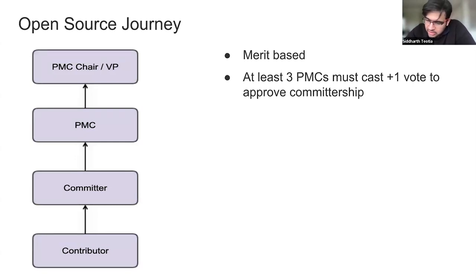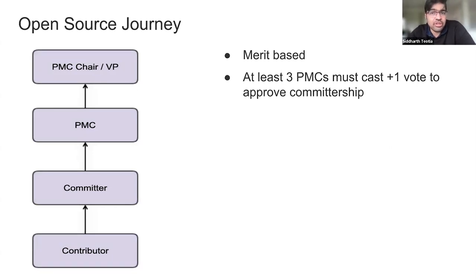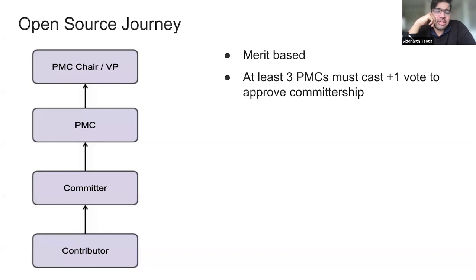The highlight of this is that this is merit-based. Your contributions will be evaluated by the PMC body — their impact, complexity, scope, and things like that — to assess what value you've added to the project. That's how you'll become a committer, and then similarly evaluation continues toward PMC. The general process in Apache is that whenever a vote happens to make a contributor a committer, or a committer a PMC, at least three PMCs must cast their vote to approve.